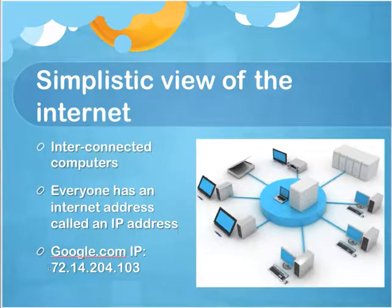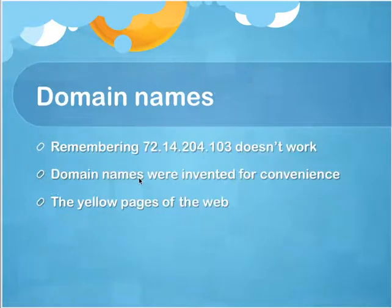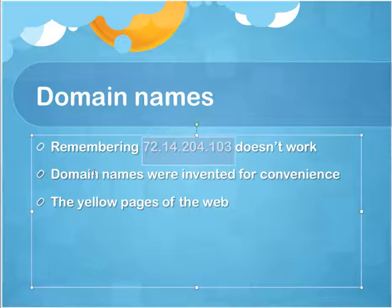Google.com, for example, is this number right here. Now, remembering a number like this and typing it in your browser obviously doesn't really work. So domain names are invented for our convenience — it's sort of a yellow pages of the web.